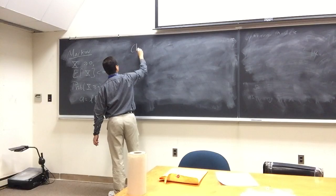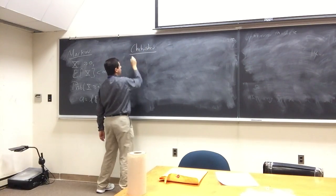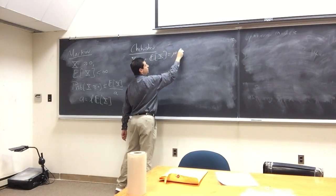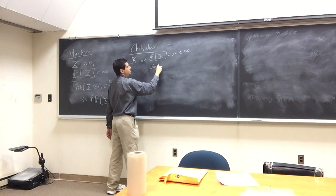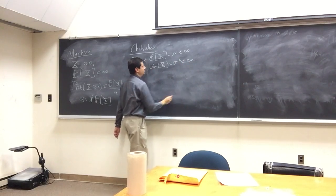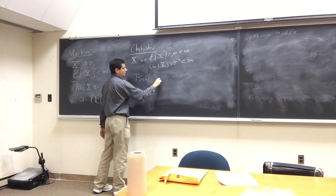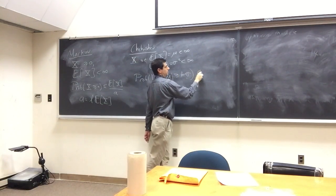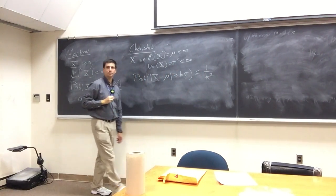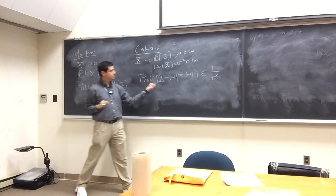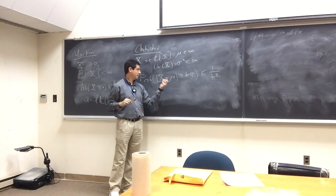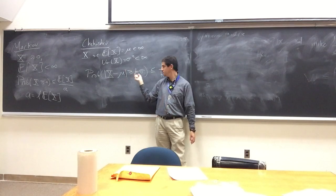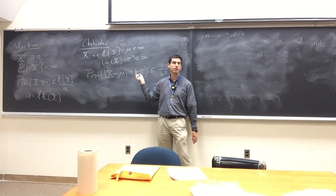Then we have Chebyshev's inequality. For Chebyshev, we have x such that the expected value of x equals mu is finite, and the variance of x equals sigma squared is finite. Then we get the probability that |x − mu| is greater than or equal to k*sigma is at most 1 over k squared. What I like about this is it looks at the right way to study fluctuations — fluctuations about the mean in terms of multiples of the standard deviation.